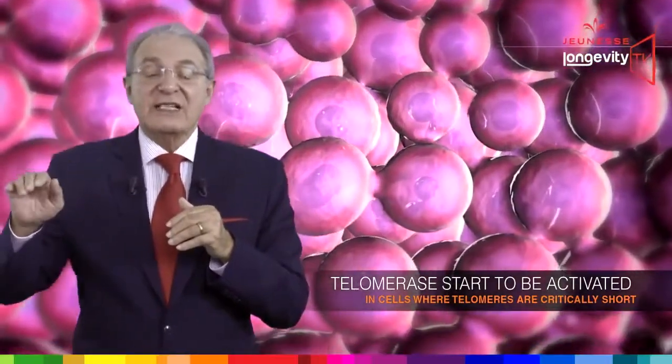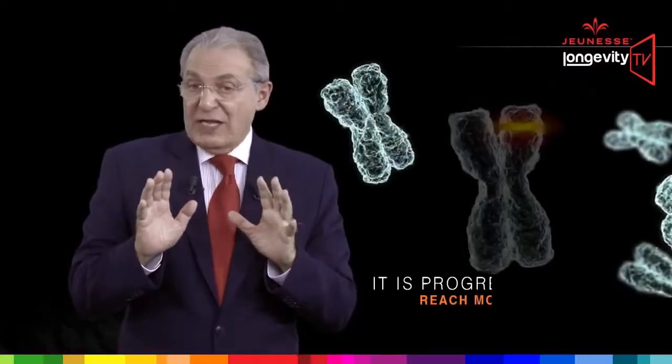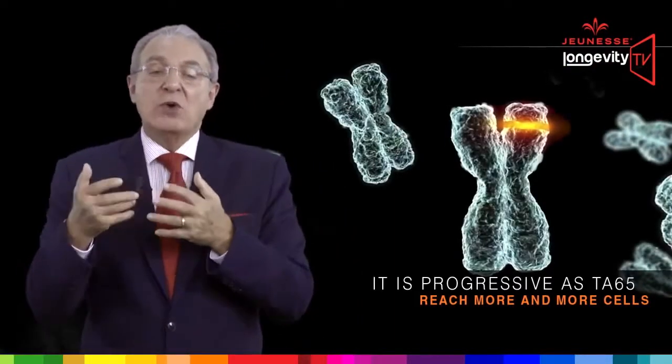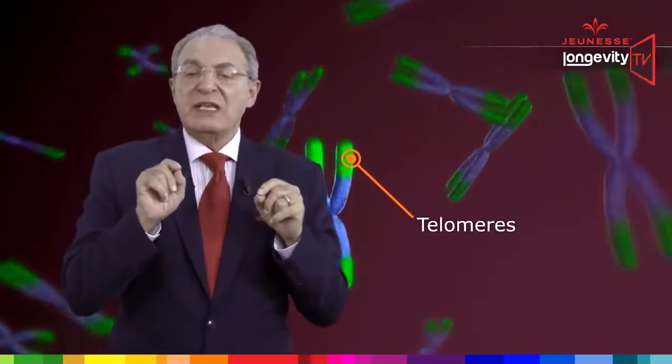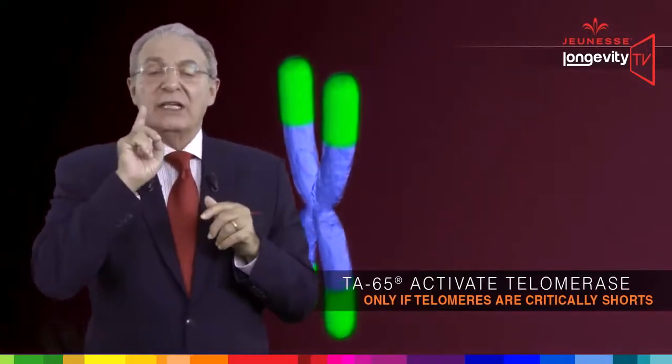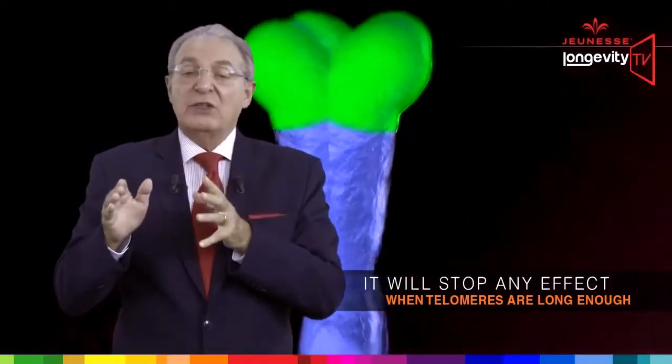So what happens when we start using Finiti? After taking Finiti, telomerase starts to be activated in cells where telomeres are critically short. At the moment when telomeres are longer than 5,000 base pairs, cells start to divide again and life is back in those cells. It is progressive as TA-65 reaches more and more cells, and if you take it on a regular basis the process of cell rejuvenation will start. The good news is that TA-65 has a so-called transient effect — it will activate telomerase only if telomeres are critically short, and will stop any effect when telomeres are long enough to induce cellular division.